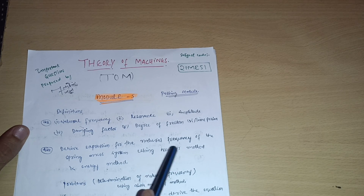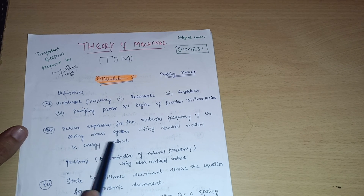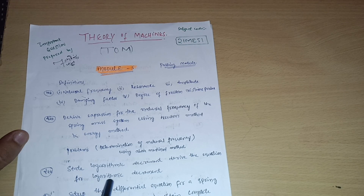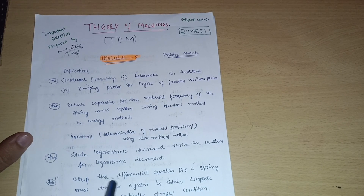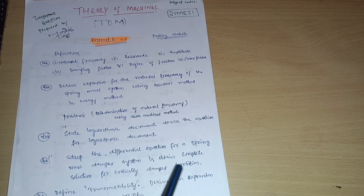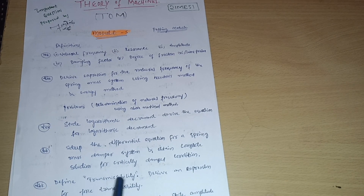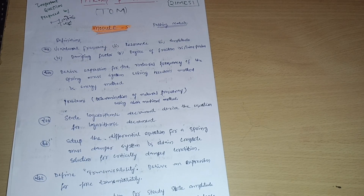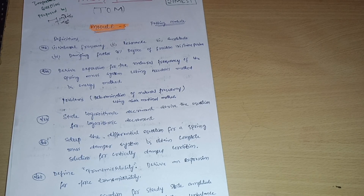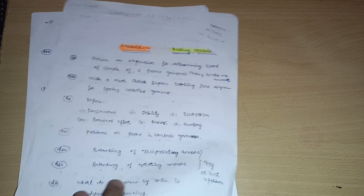These are very simpler problems which you should go through, and you will easily get 10 to 12 marks by covering this much portion. Next, an important derivation is logarithmic decrement — derive the equation for logarithmic decrement. Next, set up the differential equation for a spring-mass-damper system and obtain the complete solution for the critically damped condition. Next, the most important one: define transmissibility and derive an expression for force transmissibility. Also, derive an equation for steady-state amplitude for forced vibration with rotating unbalance.